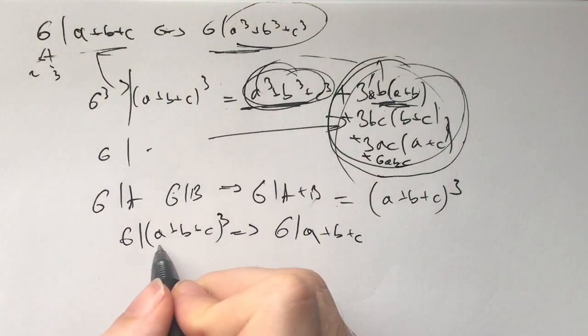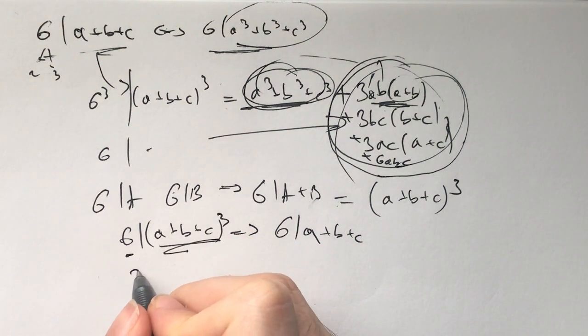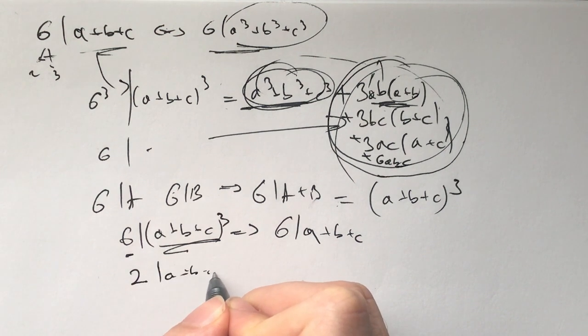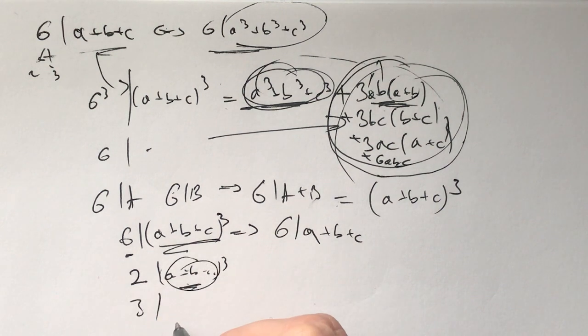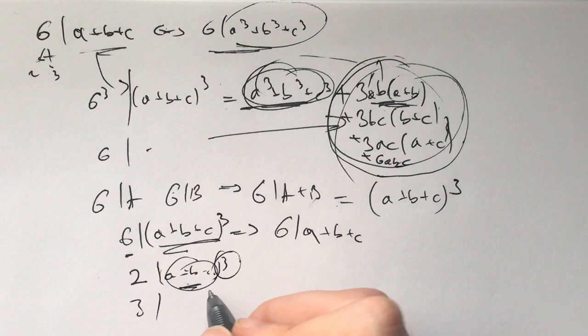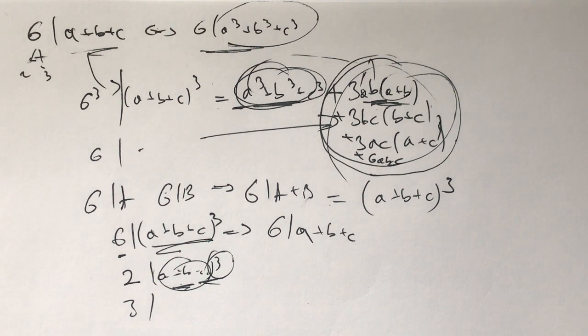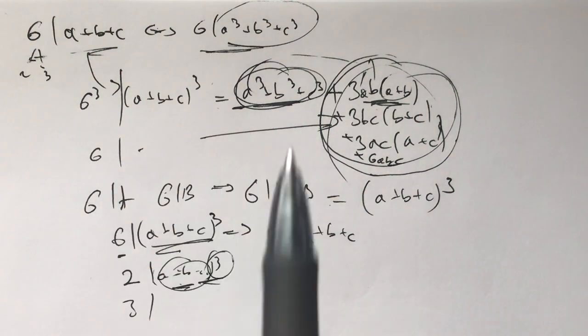And the reason you can infer this also is because you have 2 divides a plus b plus c cubed, which means a plus b plus c needs to be divisible by 2. And 3 divides this, so a plus b plus c needs to be divisible by 3. Otherwise, how are you going to get the number divisible by 3? Like if a plus b plus c isn't divisible by 2, then a plus b plus c to the power of anything isn't divisible by 2. And same with, if a plus b plus c isn't divisible by 3, then a plus b plus c to the power of anything is not divisible by 3. So that's how you can solve this one way.